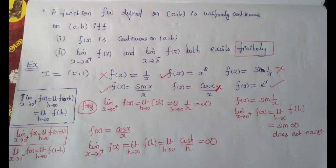First, f(x) = 1/x. We check if it is continuous in open interval (0,1). We look at the limit as x tends to 0-plus of f(x). Using the formula: limit h tends to 0 of f(a+h), limit x tends to 0-plus of f(x) equals limit h tends to 0 of f(h) = limit h tends to 0 of 1/h = infinity. So the condition that the limit must be finite is not satisfied.